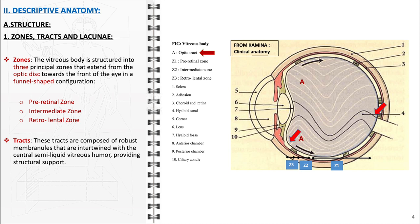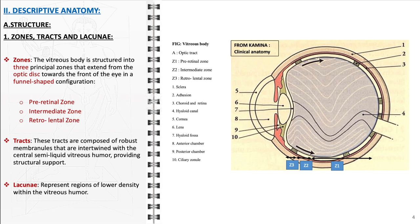Interlaced within the vitreous are tracts formed by robust collagen fibers and membranules that provide structural support. These tracts are distributed throughout the vitreous, extending from the optic nerve head to the lens periphery. Furthermore, within the vitreous are regions known as lacunae, which are areas of lower density that increase in number and size as part of vitreous syneresis, an age-related change.